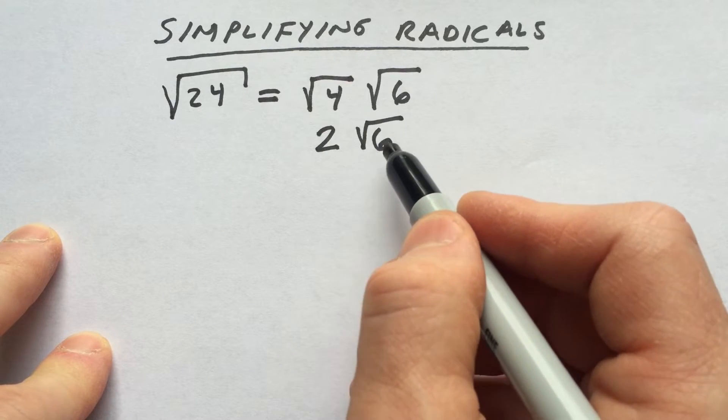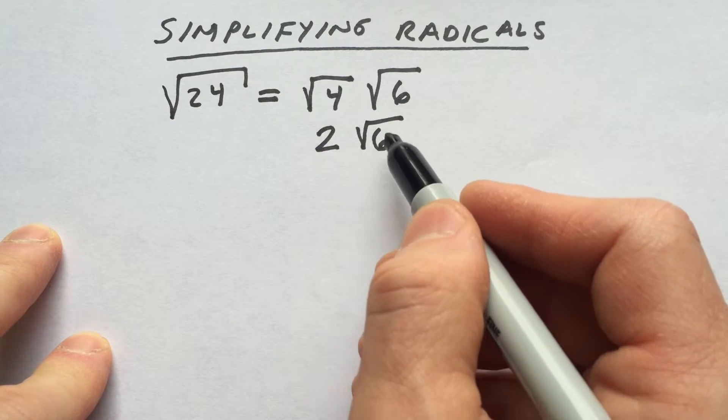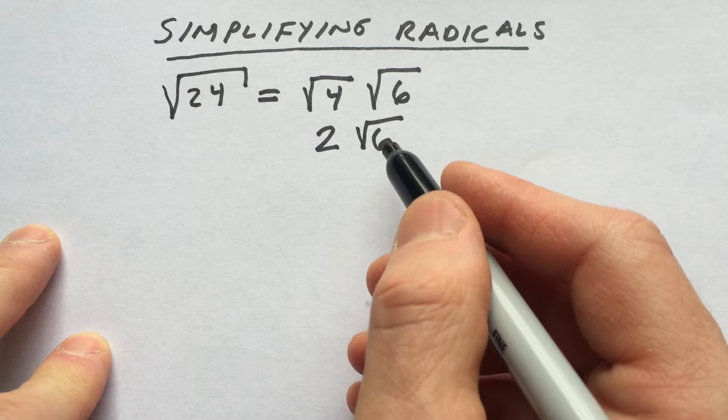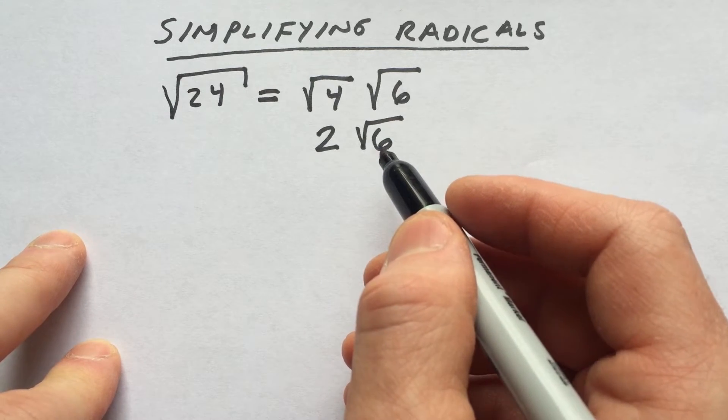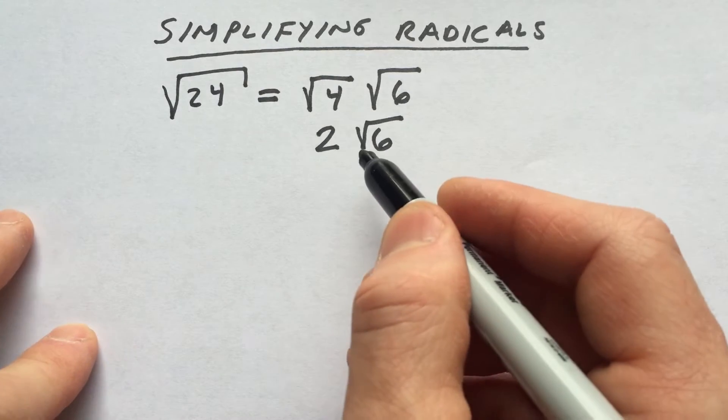Now, square root of 6, there's not any perfect squares that we can divide out of 6 like 9, which is square root of 9 is 3, or 16, which is 4, or 25, which is 5. This is as far as we can simplify this one.